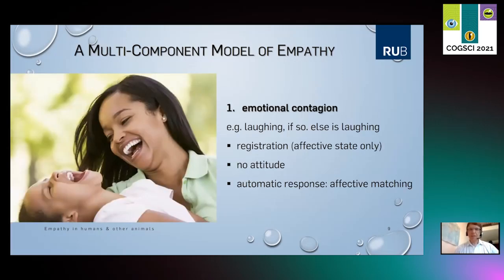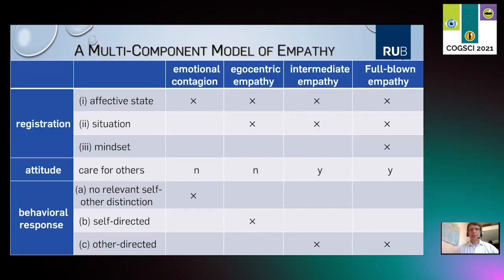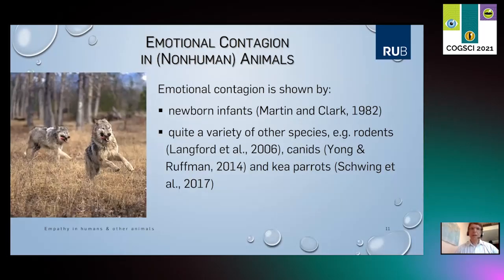What we offer is a multi-component model of empathy, starting with the very basic form of emotional contagion — laughing if someone else is laughing, being sad when someone else is sad. This involves the registration of the other's affective state. What is not involved is an attitude of caring, but we have a typical response directed at the registration of the other's state. So we have two components — the registration and the response behavior — but it is a very basic form of empathy because this response behavior remains automatic: it is just affective matching. The registration of the affective state is clearly there; the attitude is lacking, but the behavioral response directed towards the other is implemented despite being automatic.